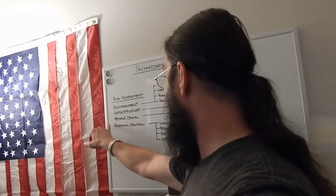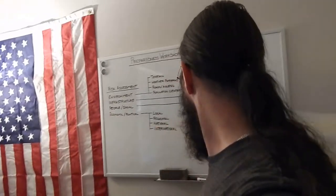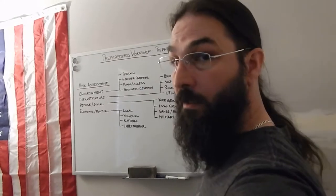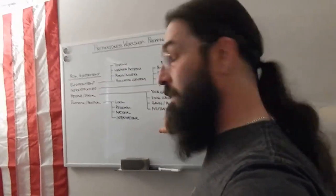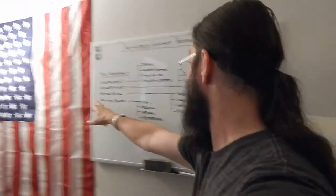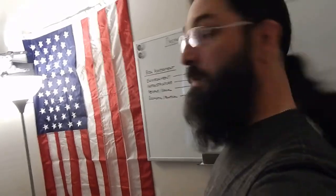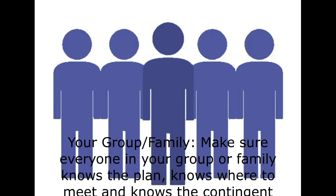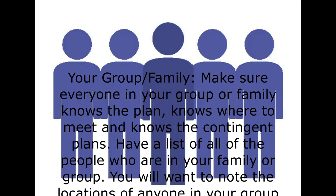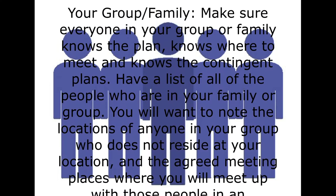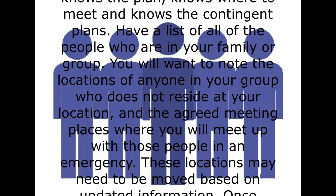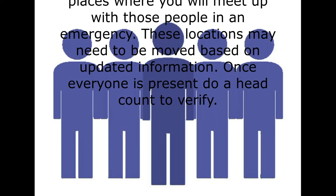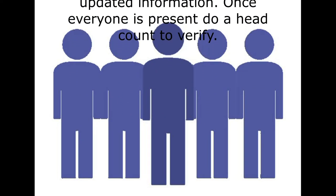When you are looking at people and the social situation in your area, you are going to want to look at your group and family, local groups, gangs and police in the area, and the military if you have any bases or military installations nearby. Make sure everyone in your group or family knows the plan, knows where to meet, and knows the contingent plans. Have a list of all the people in your family or group, note the locations of everyone who does not reside at your location, and agree on meeting places. Once everyone is present, do a head count to verify.